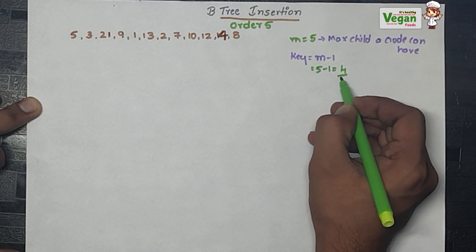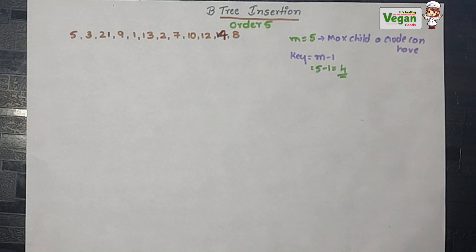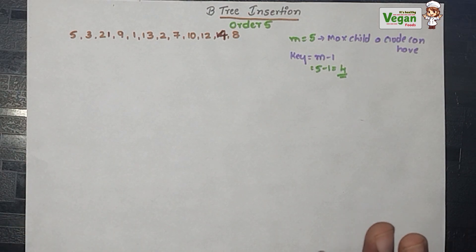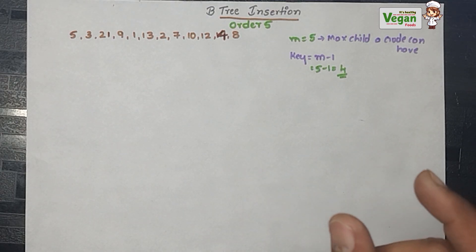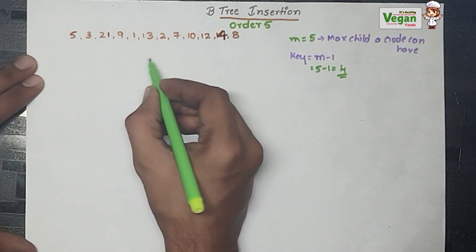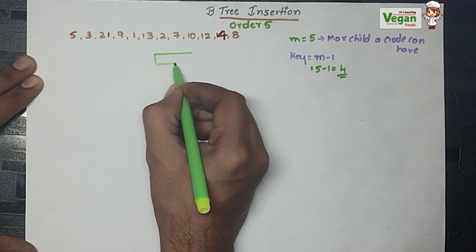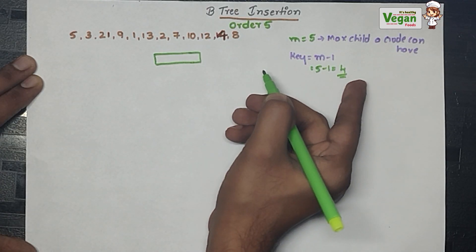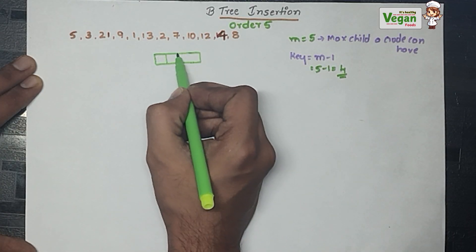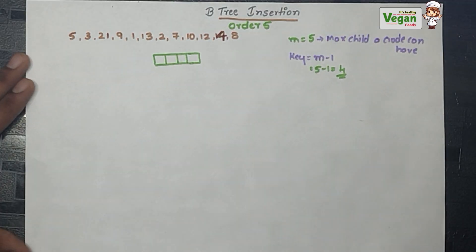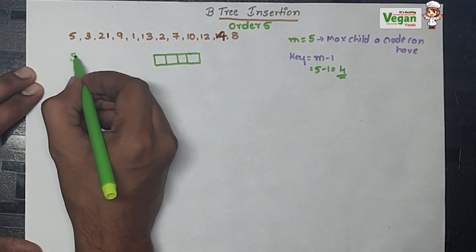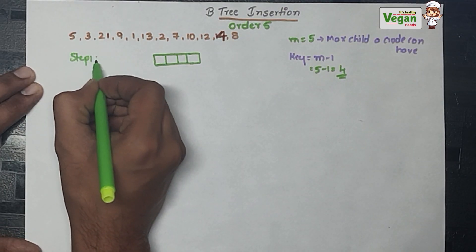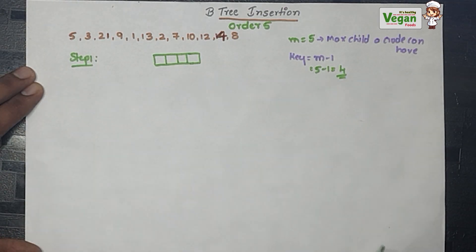That gives key value equal to 4. Each node can store 4 values — 4 bit spaces will be there in each node. So if this is a node, it will have 4 key spaces: 1, 2, 3, 4. Now this is step 1 — keep on inserting the values.